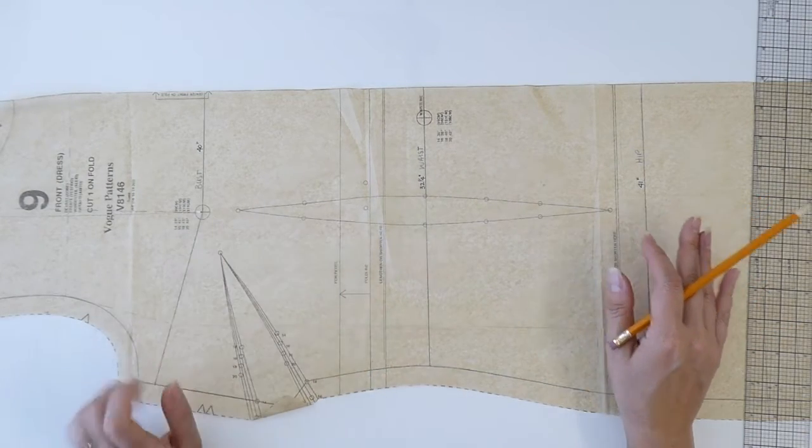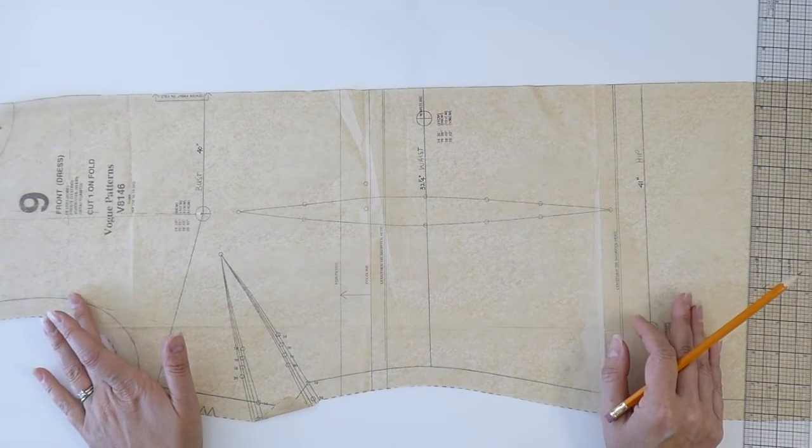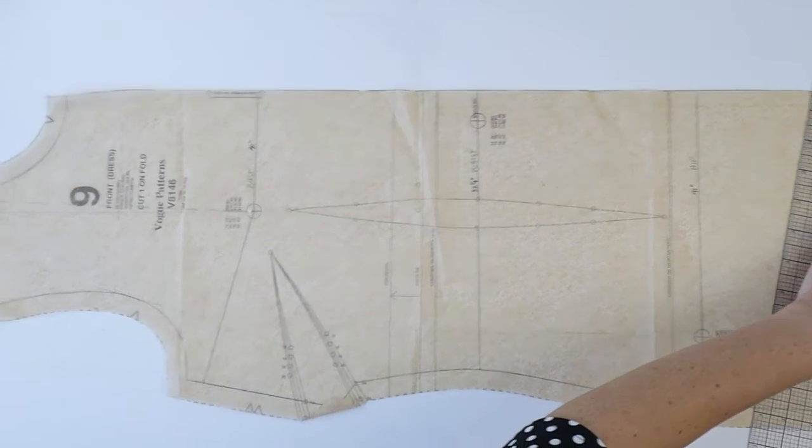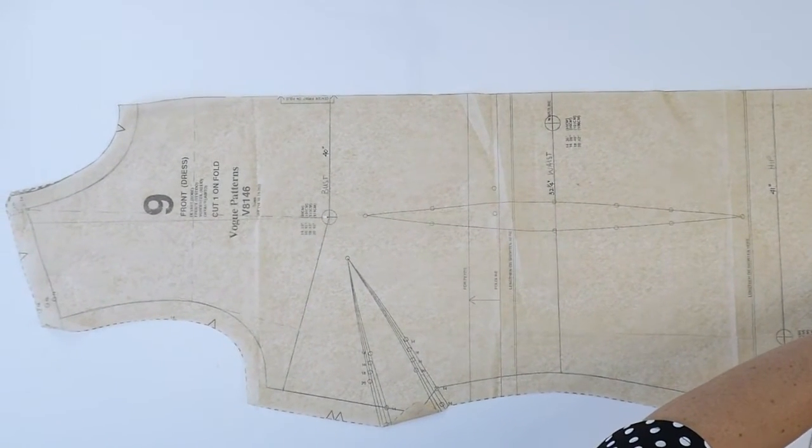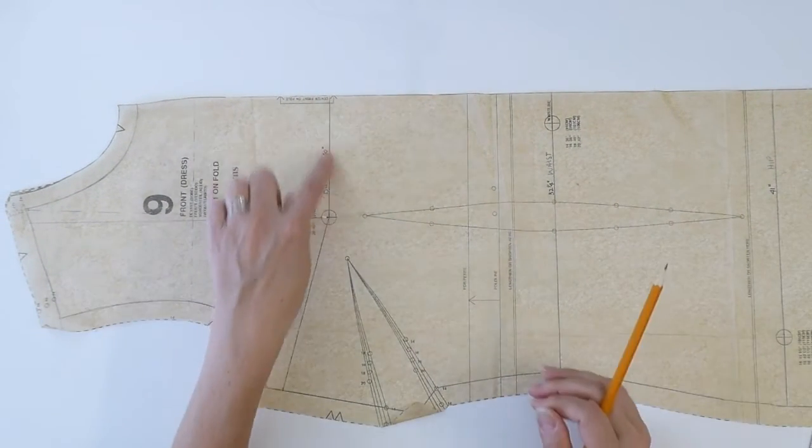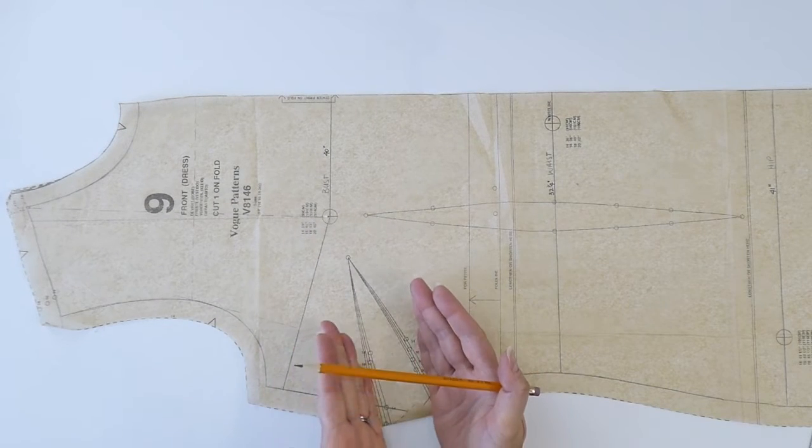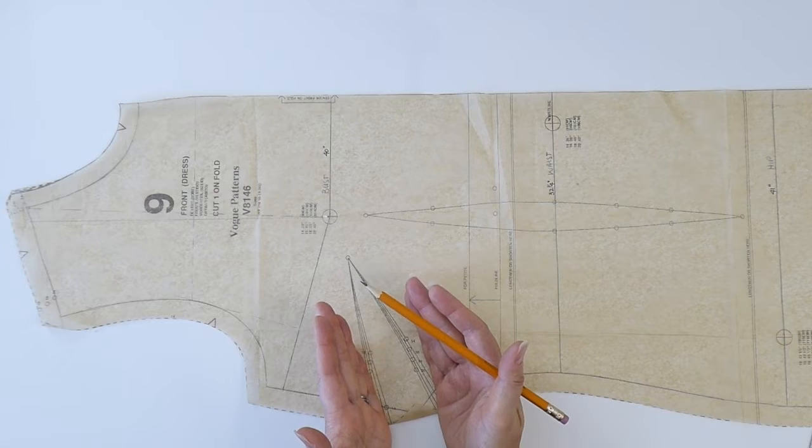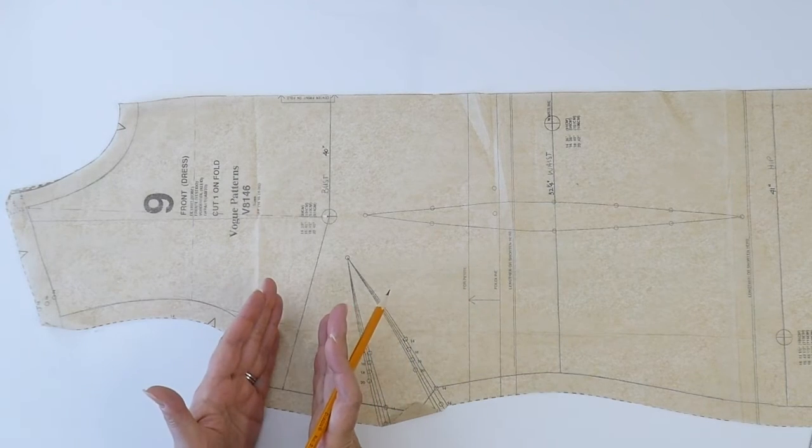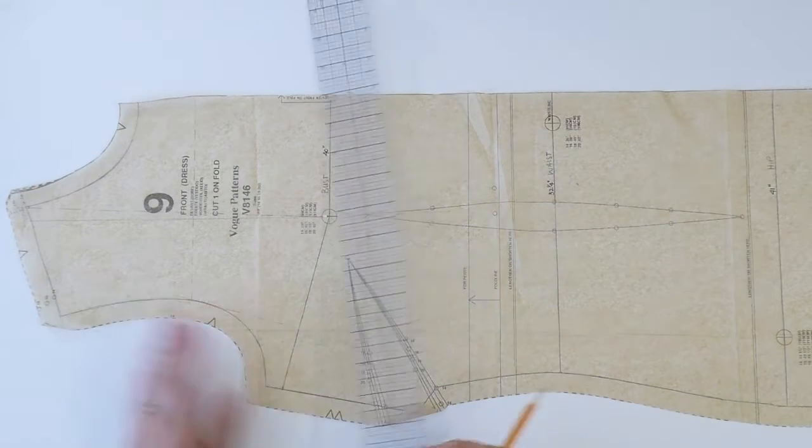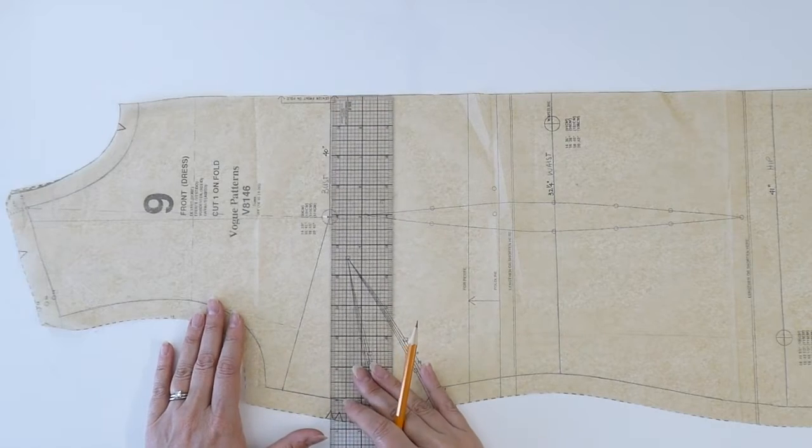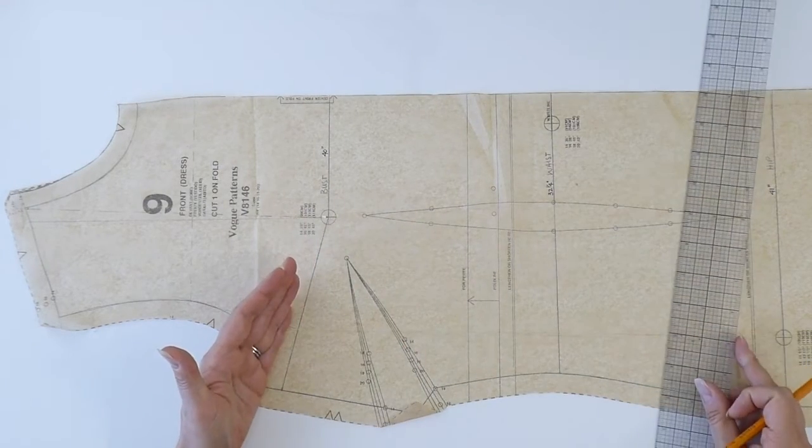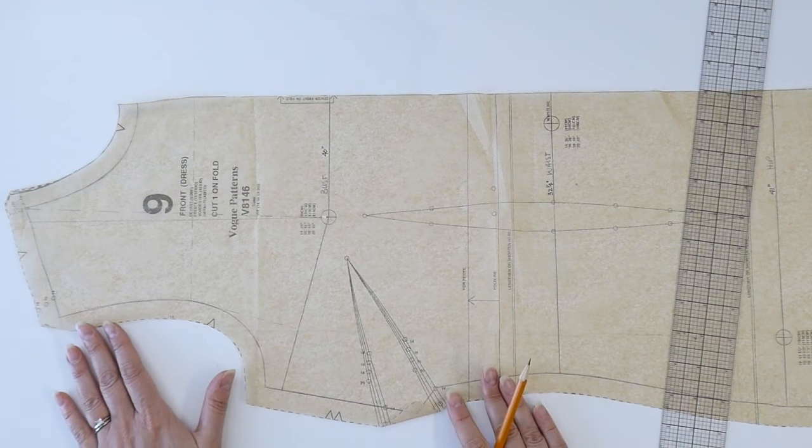The bust becomes just a little bit confusing in certain circumstances and that's simply because of the bust dart. The bust dart complicates this line because it is below the armhole. When you have a dart below the armhole, the bust position changes. So in other words, you can't just draw a straight line right across the pattern. You actually have to pitch that bust line up. So I want to show you how you can do that.